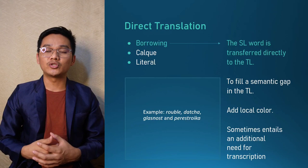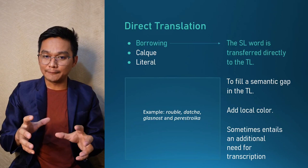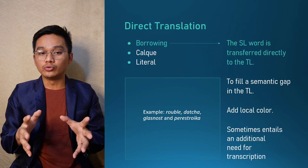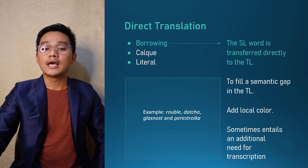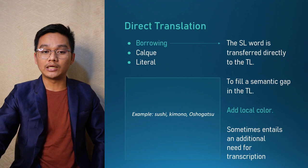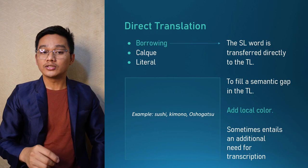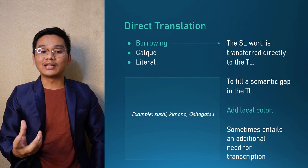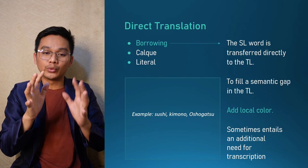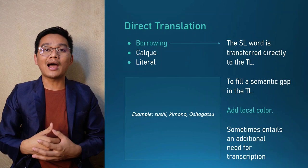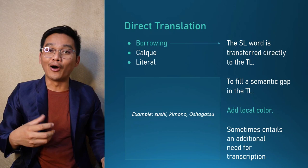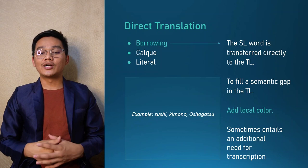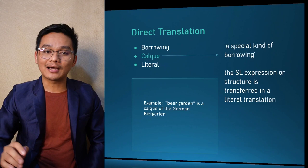Borrowing is used to fill a semantic gap in the target language — when there is no exact equivalent in the target language, translators borrow those words directly. They also add a local color. For example, the words sushi, kimono, and Oshogatsu are Japanese words incorporated into English, borrowed from the Nihongo language. They add an exotic flavor, hinting to the reader that they are reading a translated text. Sometimes borrowing also entails an additional need for transcription.